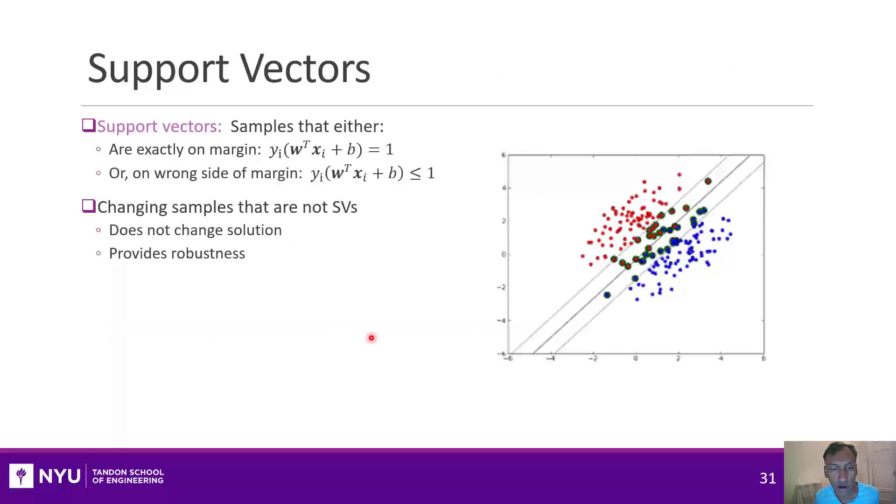One important concept whenever you do support vector machines is what's called the support vectors. Support vectors are just the samples that are either exactly on the margin or on the wrong side of the margin. If we have data like this, and let's just say that the SVM picks this line like this, and it picks this margin, which are these two dotted lines on the two sides, all of these red points and blue points which are circled in green are the support vectors. Because they either line up right on the margin, or they violate that margin constraint. The important thing about the support vectors is the following: if you take the points which are not support vectors and you move them in any way, then they will not change the final solution. So it's kind of robust to all the non-support vector points. If there's noise here, it doesn't affect that.